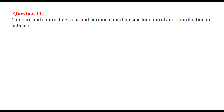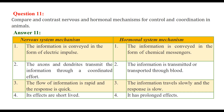Compare and contrast nervous and hormonal mechanisms for control and coordination in animals. In the nervous system, information is conveyed as electrical impulses via axons and dendrites — axon sends away, dendrites receive towards the cell body. In the hormonal system, information is conveyed as chemical messengers transported through blood. In the nervous system, the flow of information is rapid and the response is quick; in the hormonal system, information travels slowly and the response is slow. Effects are short-lived in the nervous system, but prolonged in the hormonal system.